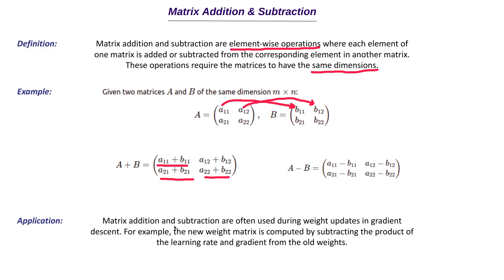When it comes to deep learning, matrix addition and subtraction are often used during weight updates and gradient descent. For example, the new weight matrix is computed by subtracting the product of the learning rate and gradient from the old weights. In gradient descent we try to find optimum weights and biases, and we constantly update the weight and bias values. The gradient tells how much the loss function changes when a weight changes, and the learning rate controls how much change is applied.